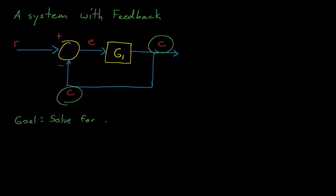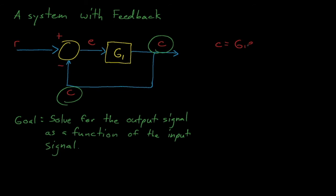From here, we can solve for the output signal C as a function of the input signal by crafting a series of simultaneous equations. We know that C is equal to G1E, and that E is equal to R minus C.